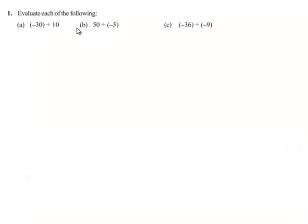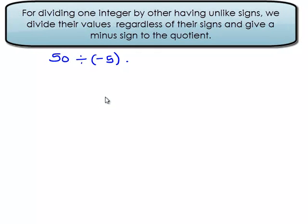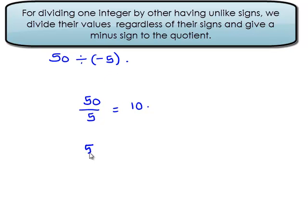We will see the second bit. The question is, 50 divided by negative 5. When we divide two integers, first we divide their values regardless of signs. That is, 50 divided by 5 gives 10. When we divide two integers having opposite signs, we always get a negative sign in the answer, which implies 50 divided by negative 5 gives negative 10.